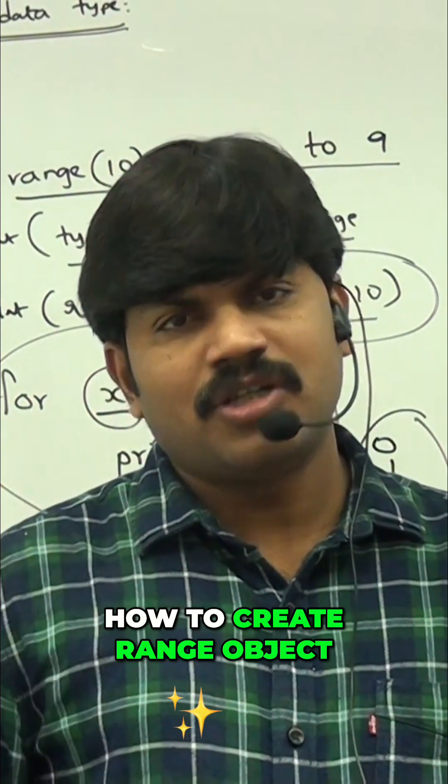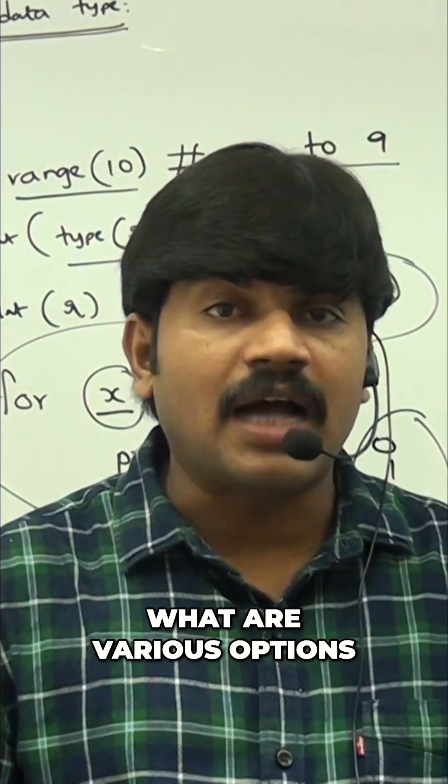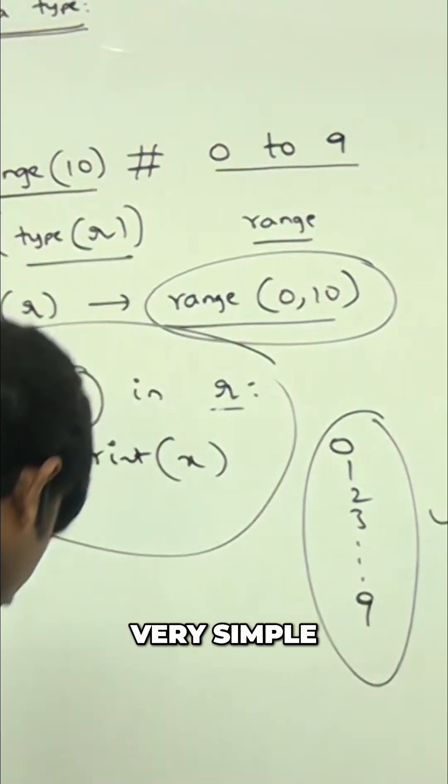How to create a range object? What are the various options available? Very simple.